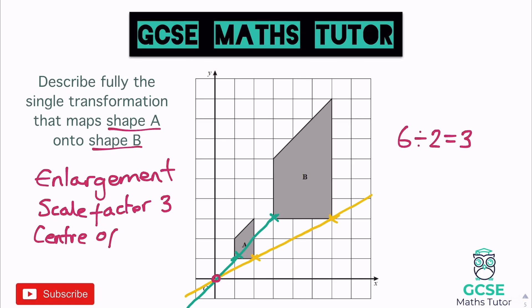Those two lines cross at (0,0), so our center of enlargement is (0,0) — the origin. We write: enlargement, scale factor three, center (0,0). You can verify by counting: to the small corner is two across and one up; times three gives six across and three up, which lands on the correct corner of the large shape. Just be very careful when drawing those lines — if they're not accurate, they may not meet exactly on the coordinate.